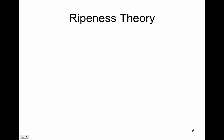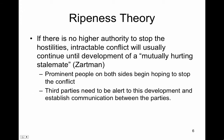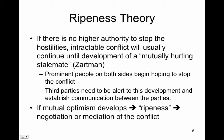How can we de-escalate such intractable conflicts? If there is no higher authority to stop the hostilities, intractable conflict will usually continue until the development of a mutually hurting stalemate. This is what Zartman explains in his ripeness theory. This means that prominent people on both sides begin hoping to escape or stop the conflict. Third parties need to be alert to this development and establish communication between the parties. If mutual optimism develops, ripeness takes place and negotiation or mediation of the conflict can start.